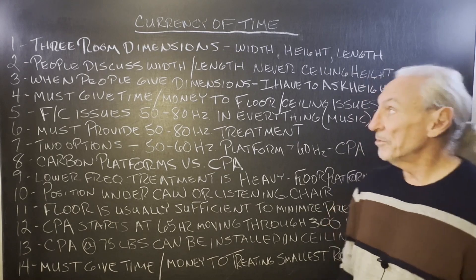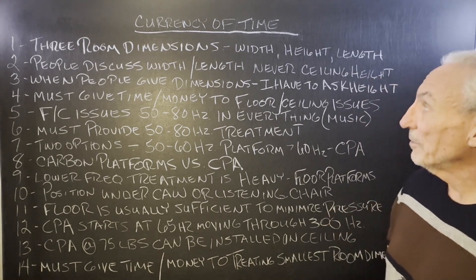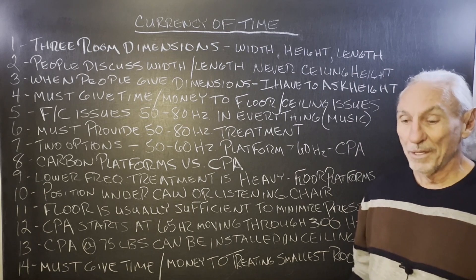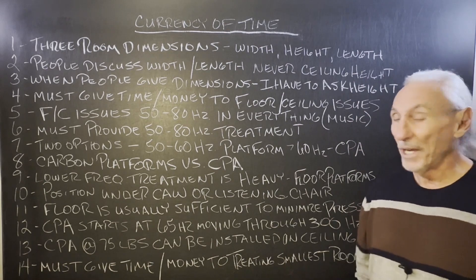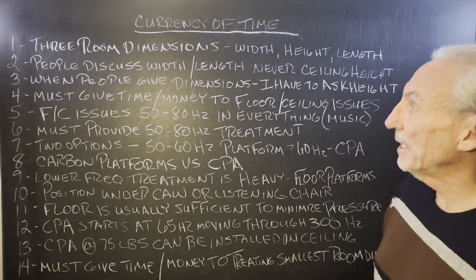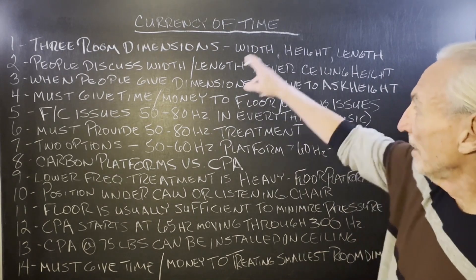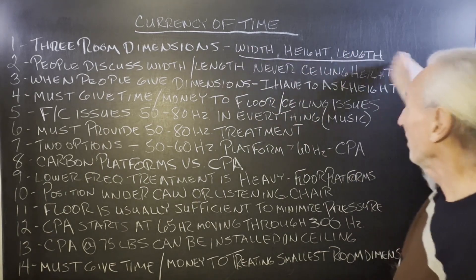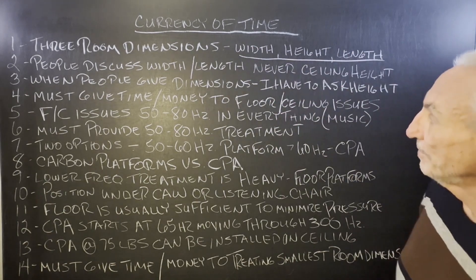Hi everyone, Dennis Foley from Acoustic Fields. Today we're going to talk about the currency of time — a little catchy title to get your attention. We have three room dimensions: width, height, and length.